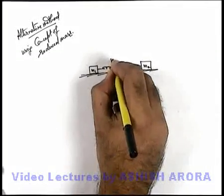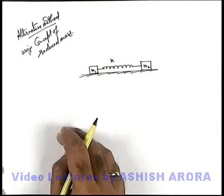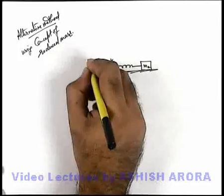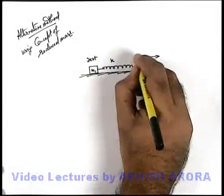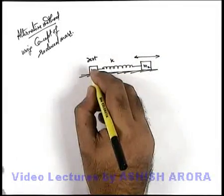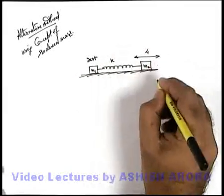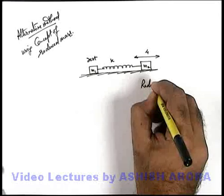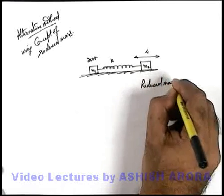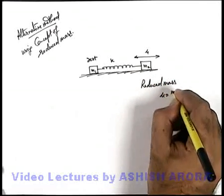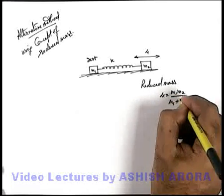So in this situation, as the spring is having force constant k, if we consider m1 to be at rest, there is no external force acting. We assume that m2 is oscillating with respect to m1, and its mass is changed to μ, where the reduced mass μ can be written as m1*m2/(m1+m2).